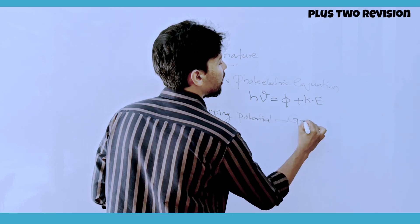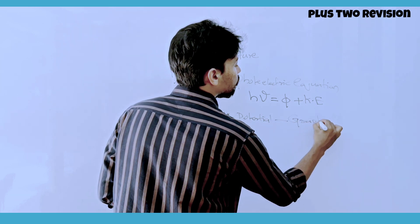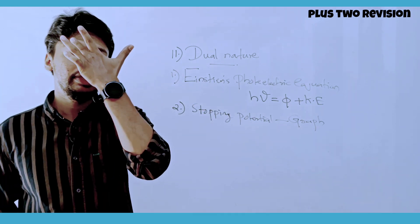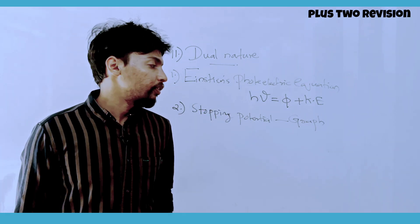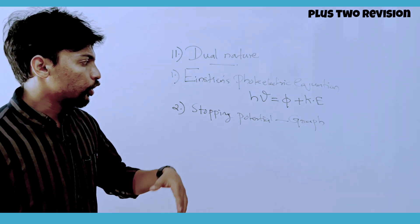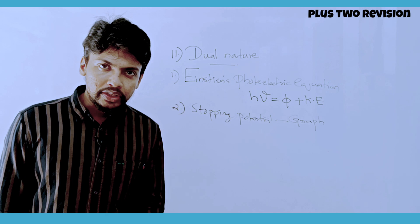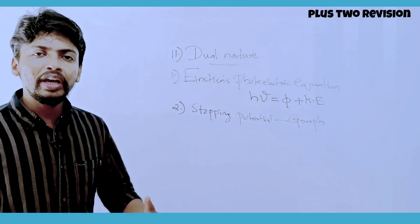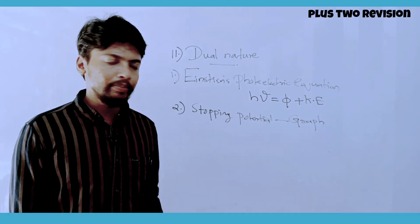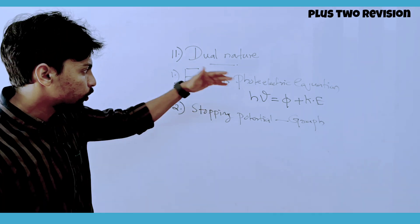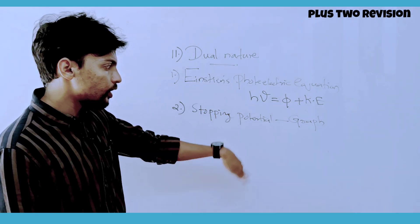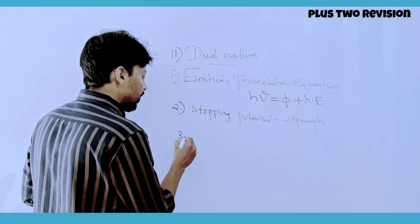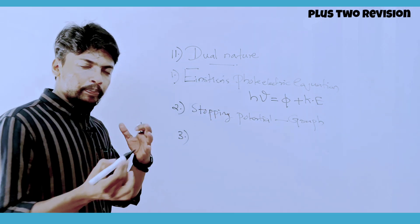The work function equation for the model exam is: h-nu equals phi plus h-nu-zero. The next topic is stopping potential — its graph, its relationship with intensity, and its relationship with frequency.